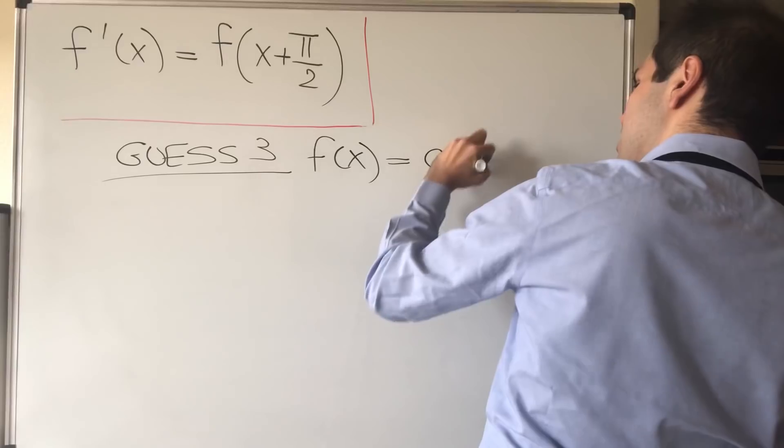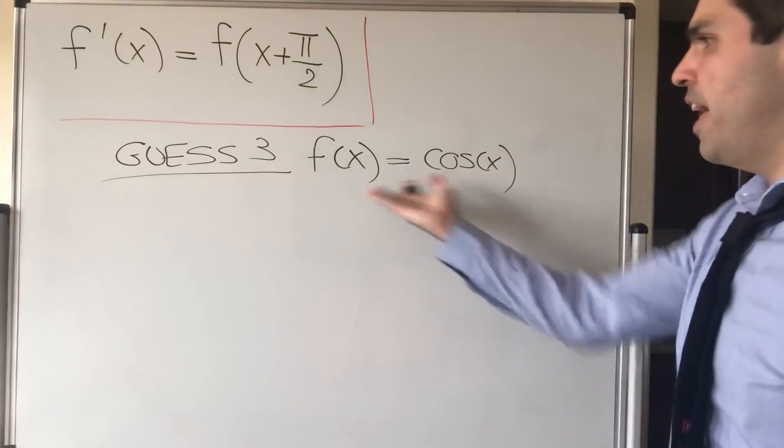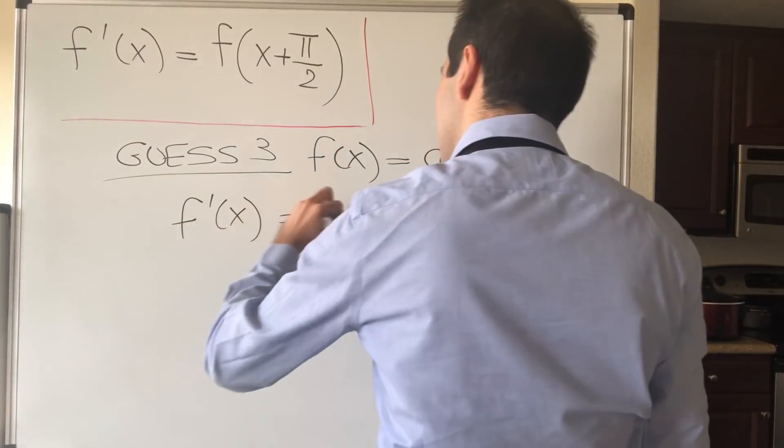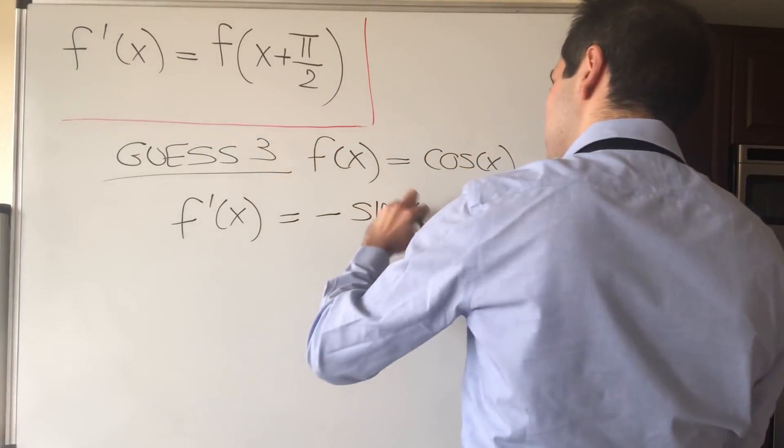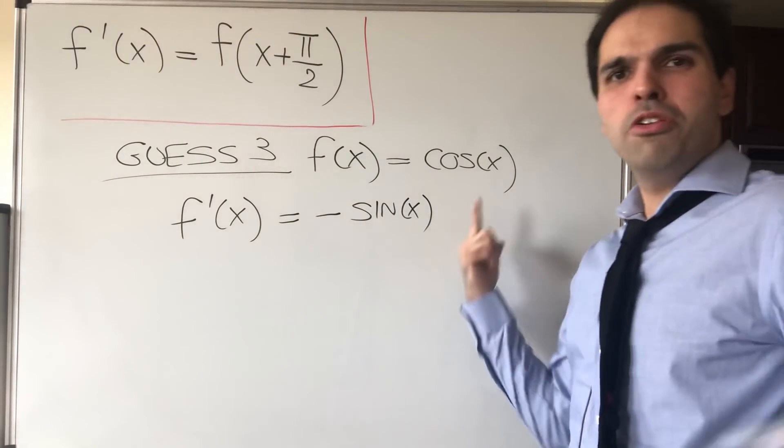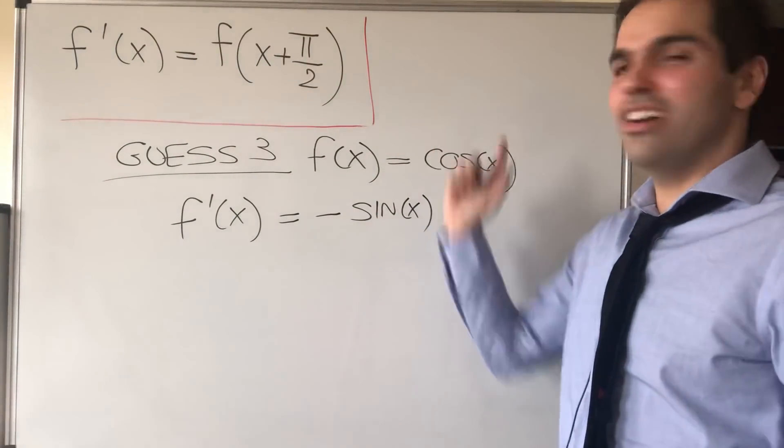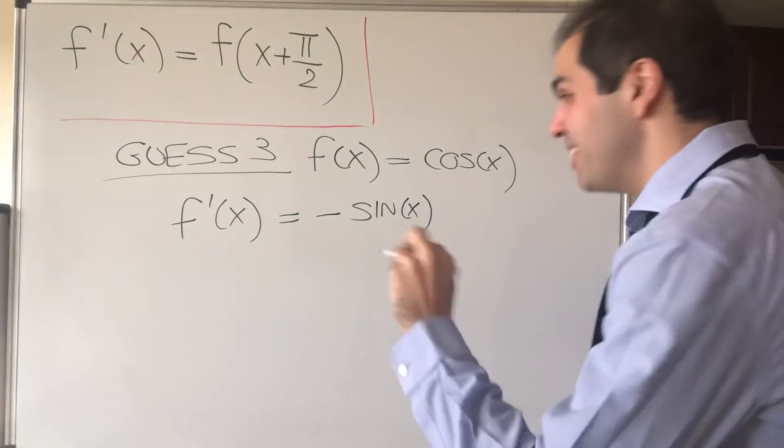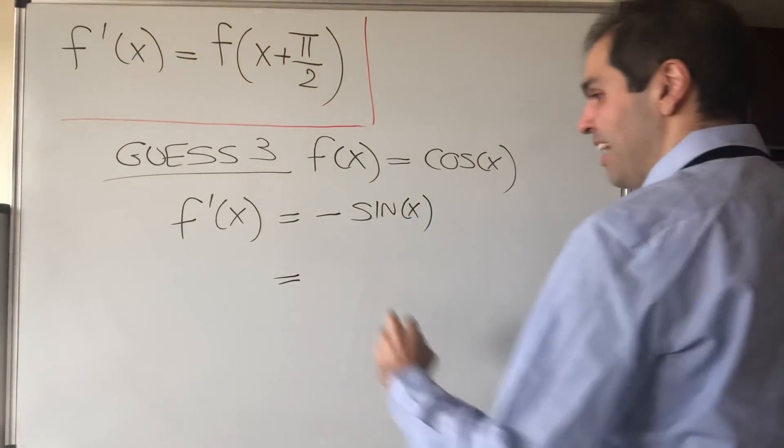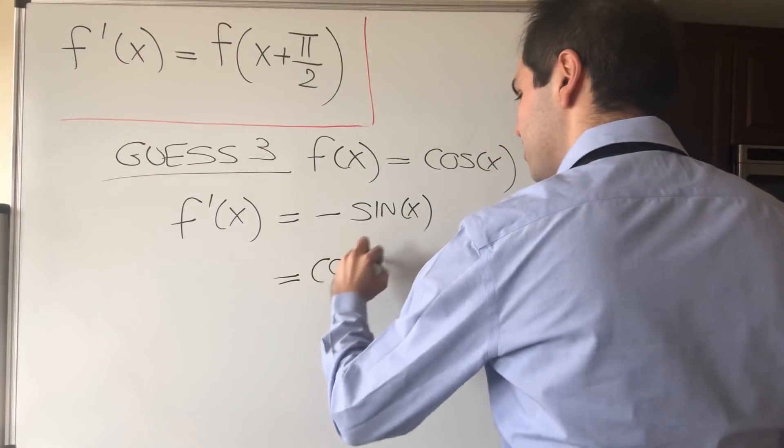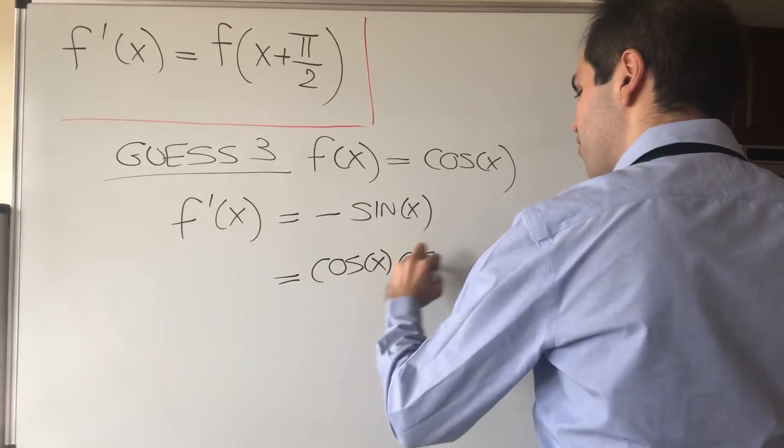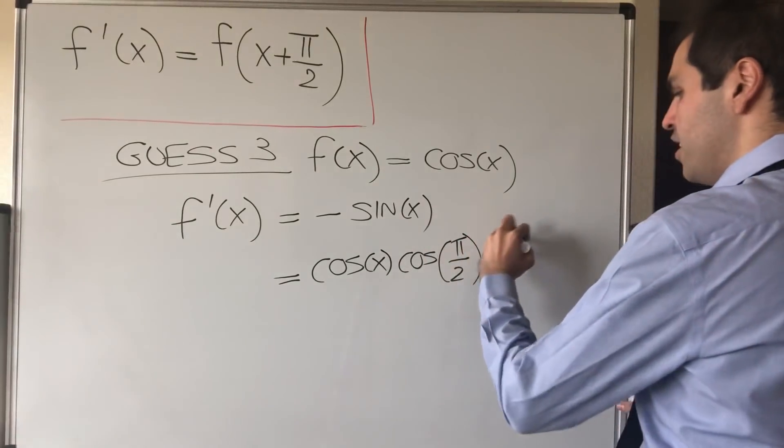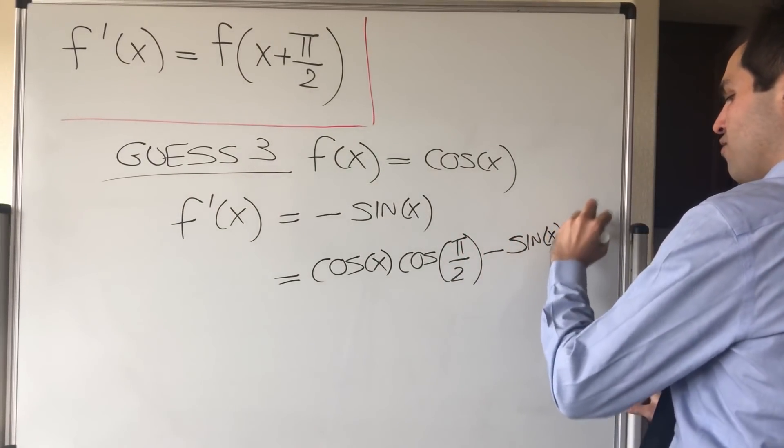Let's try f(x) equals cosine x. Well then, what is the derivative f'(x)? That is minus sine of x. But wait a moment, there's no π/2, this doesn't look like cosine, except just wait for a second. Because this is actually the same thing as cos(x)cos(π/2) minus—because again this is zero—and then minus sin(x)sin(π/2).